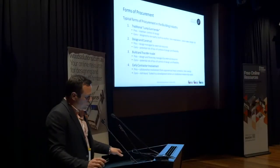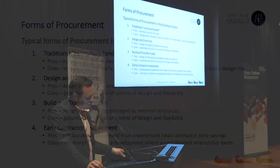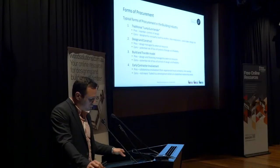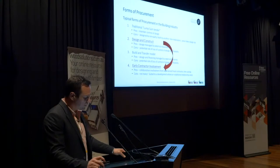There are four procurement models, probably three of which are more relevant. You've got a traditional lump sum tender — not much of this is happening at the moment. Design and construct is the default position; the majority of projects procured tend to have gone down a D&C process. Build-to-transfer is not very common but does exist in small areas. And then you've got early contractor involvement. I want to compare the default D&C option against what we believe is the most efficient and collaborative way of procuring a project: the ECI process, or early contractor involvement.